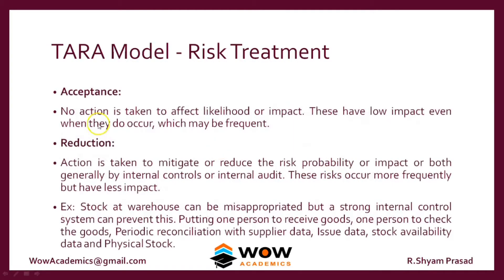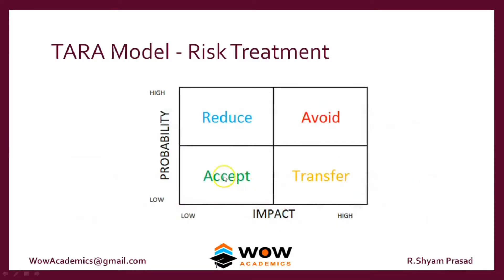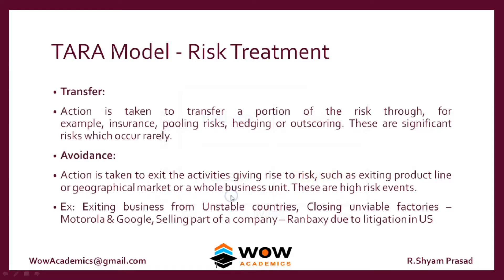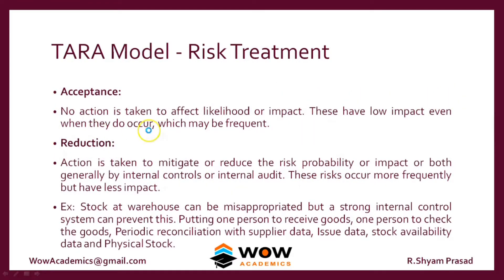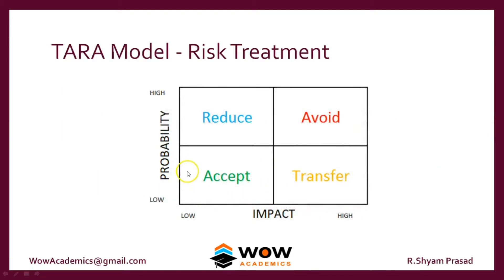The next one is Accept. Accept is where the impact is going to be low — if it occurs, it is not going to be a huge impact — and probability-wise, it is not going to occur. Better to just accept it. Don't spend money on trying to control this risk, because it is already at a lower level. We shouldn't employ some kind of technology, process, or procedure whereby that itself is of higher cost than the impact. We can better accept it.